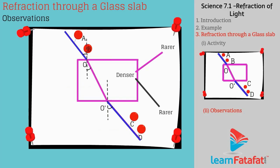The extent of bending of the ray while entering the glass slab and while leaving the glass slab is equal but opposite. Hence, the emergent ray is parallel to incident ray.